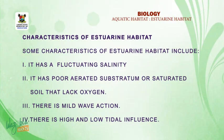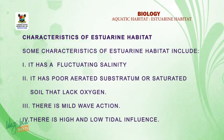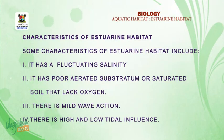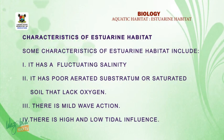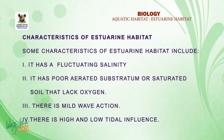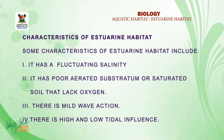Some characteristics of estuarine habitats include: one, it has a fluctuating salinity, because the salinity of the estuary depends on tidal action and the season. Two, it has a poorly aerated substratum — a saturated soil that lacks oxygen.